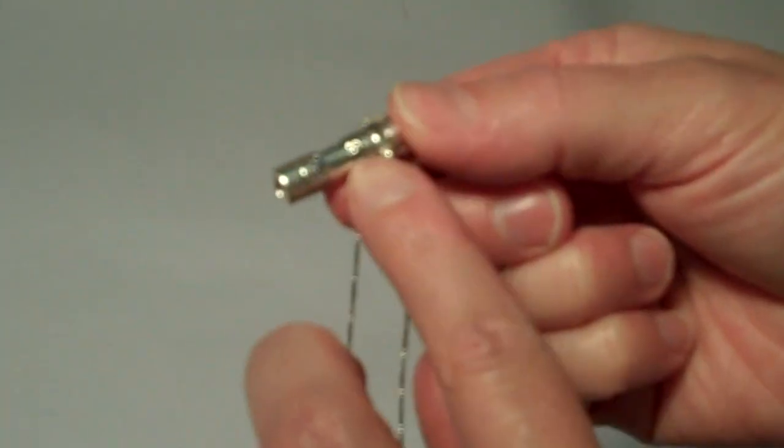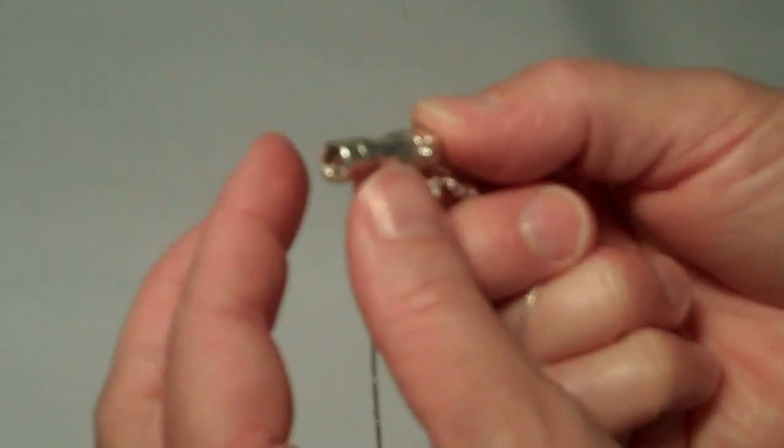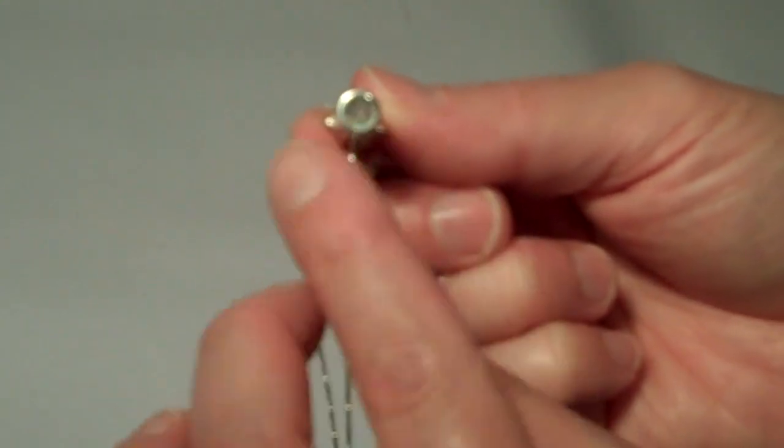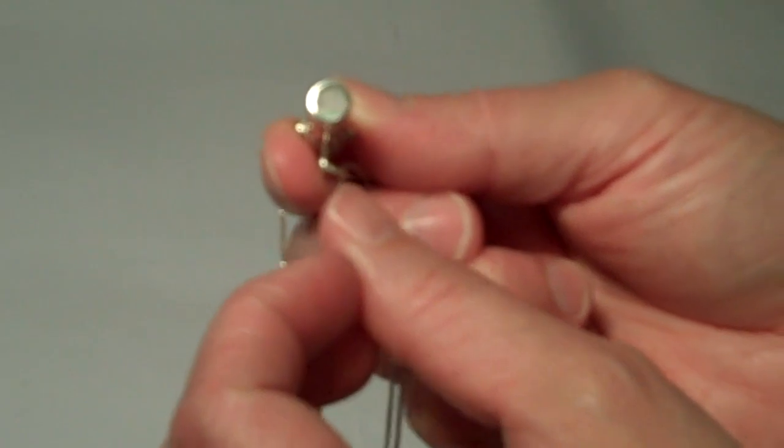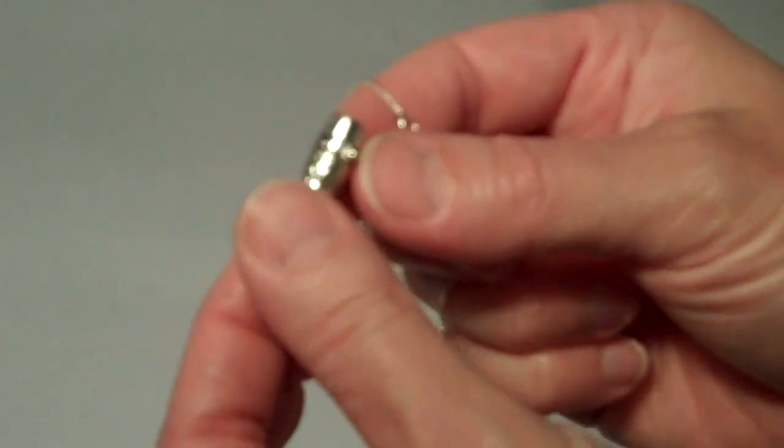This has a delicate heart filigree pattern at the top and bottom of the cylinder, and the object chamber has very tiny little Swarovski crystals inside.